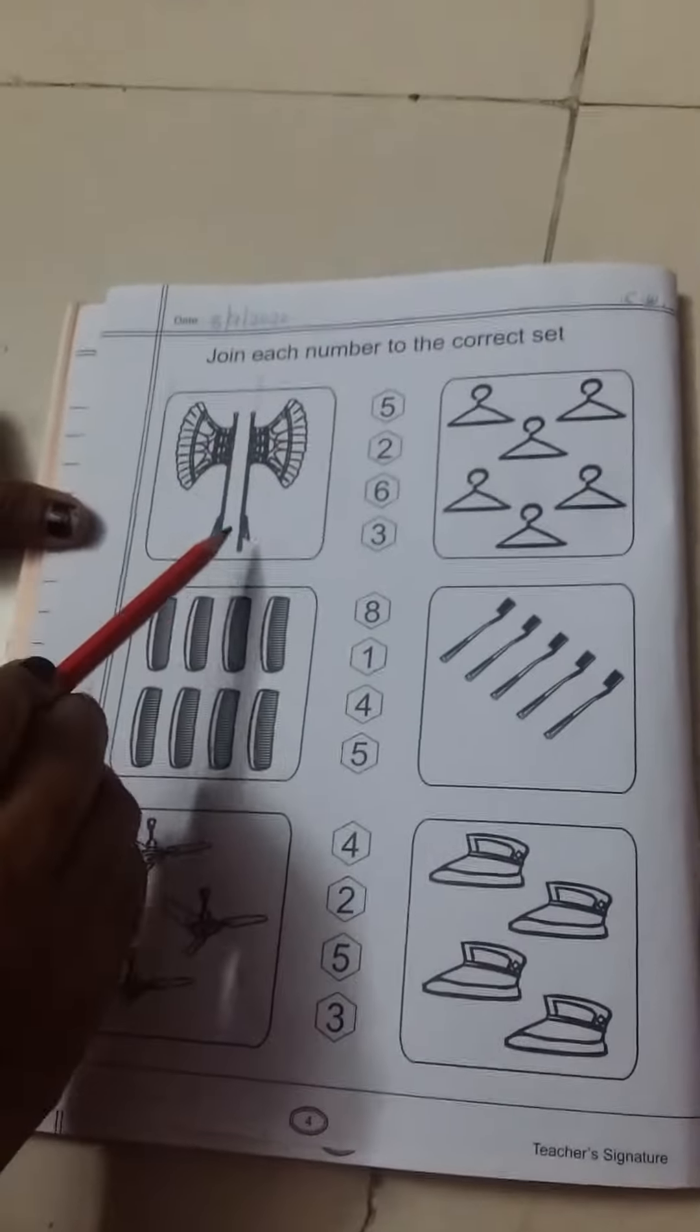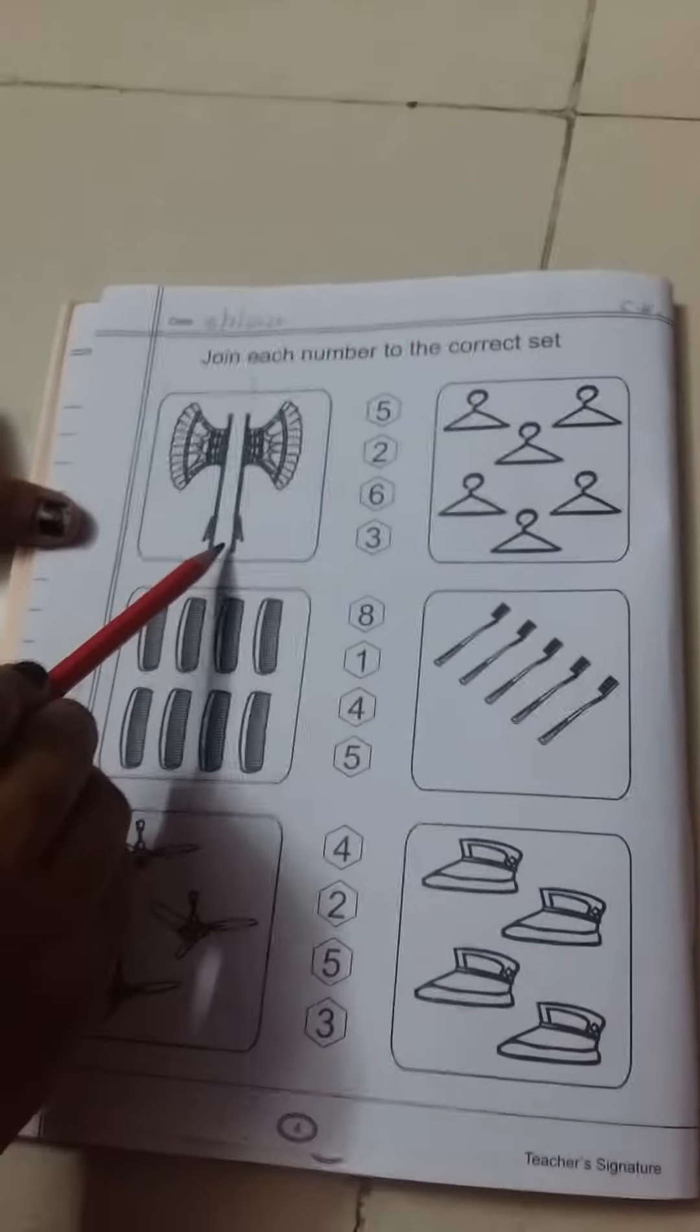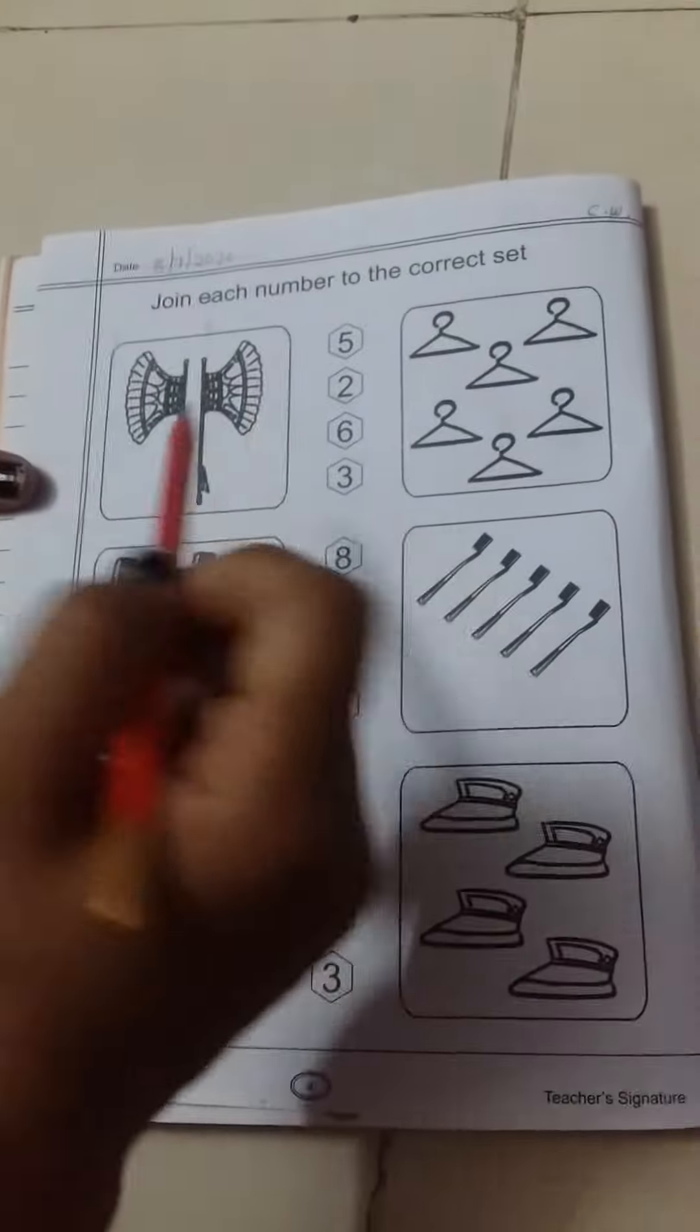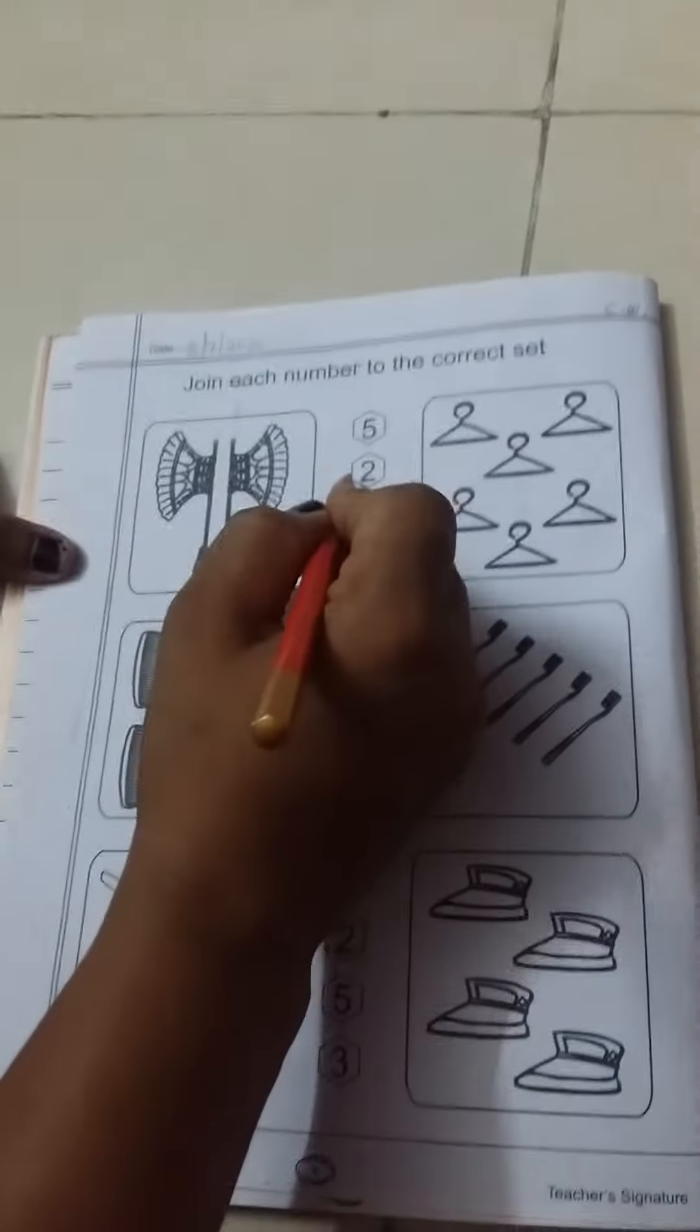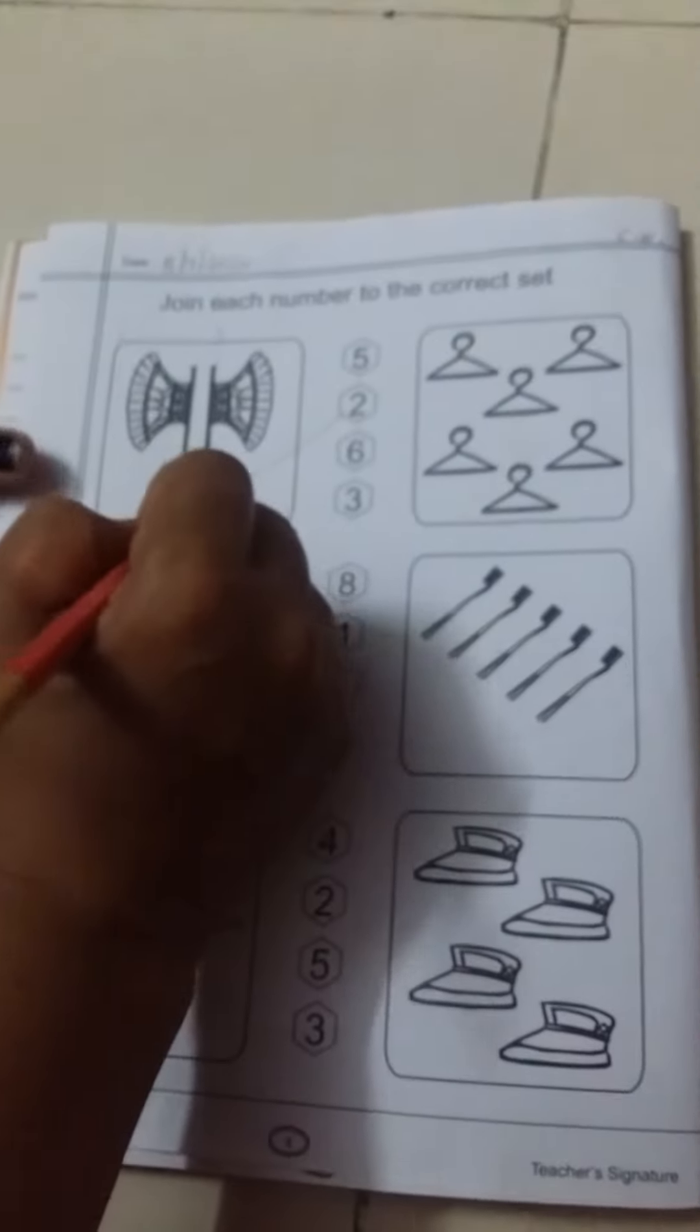We will count the number of pictures. One, two. Two pictures are given. We will write the number two and match it. Next.